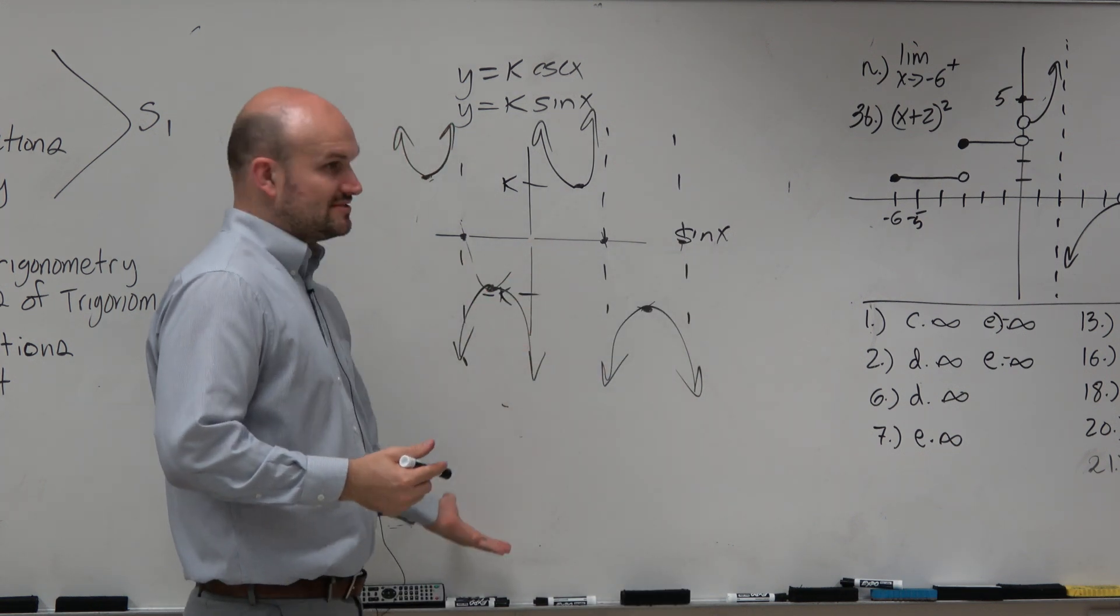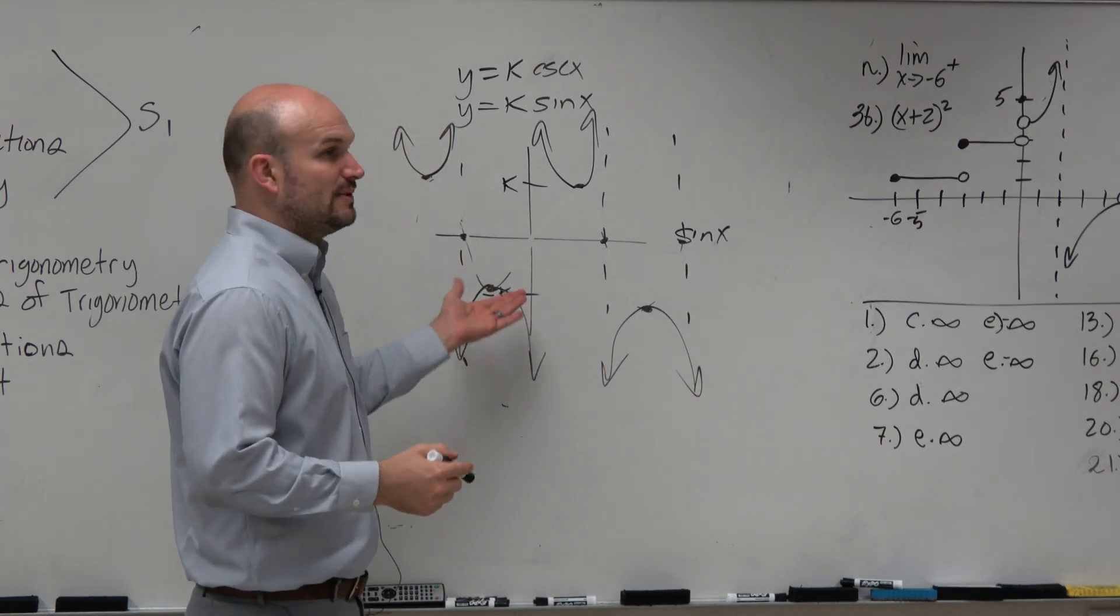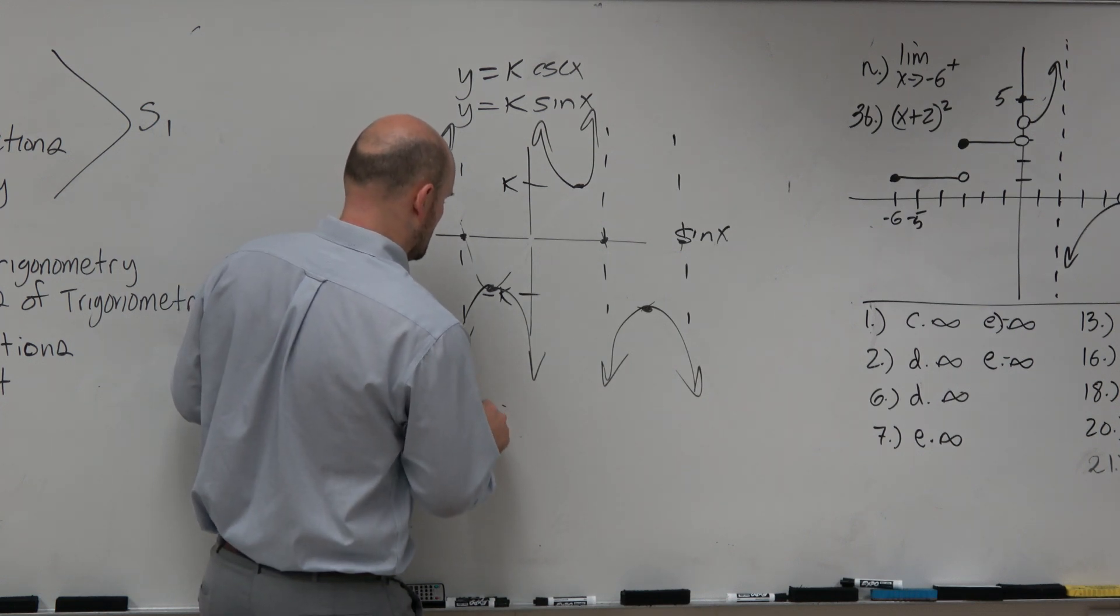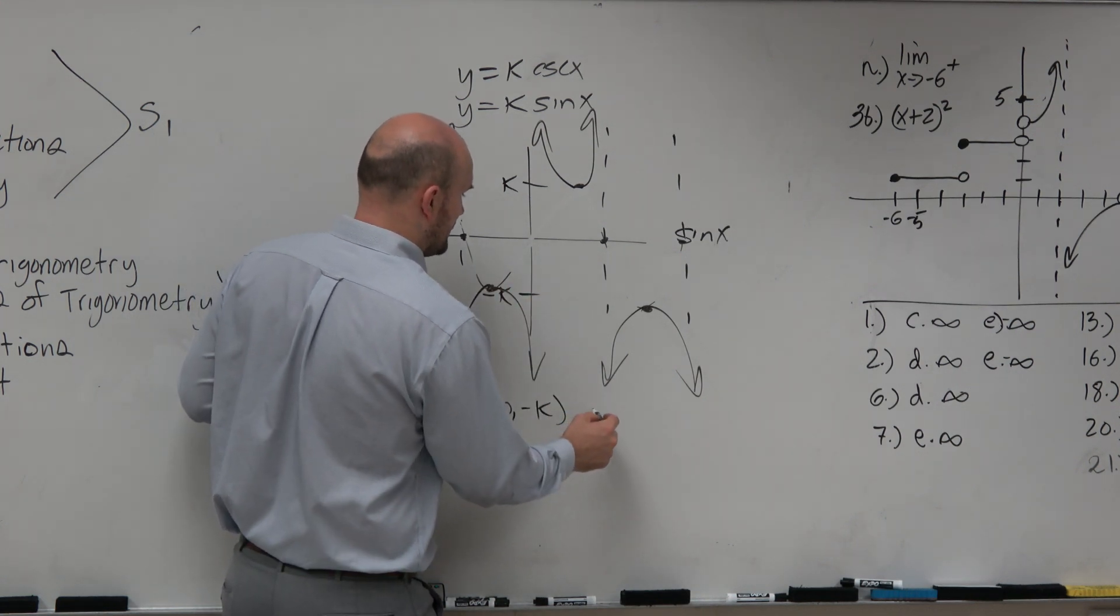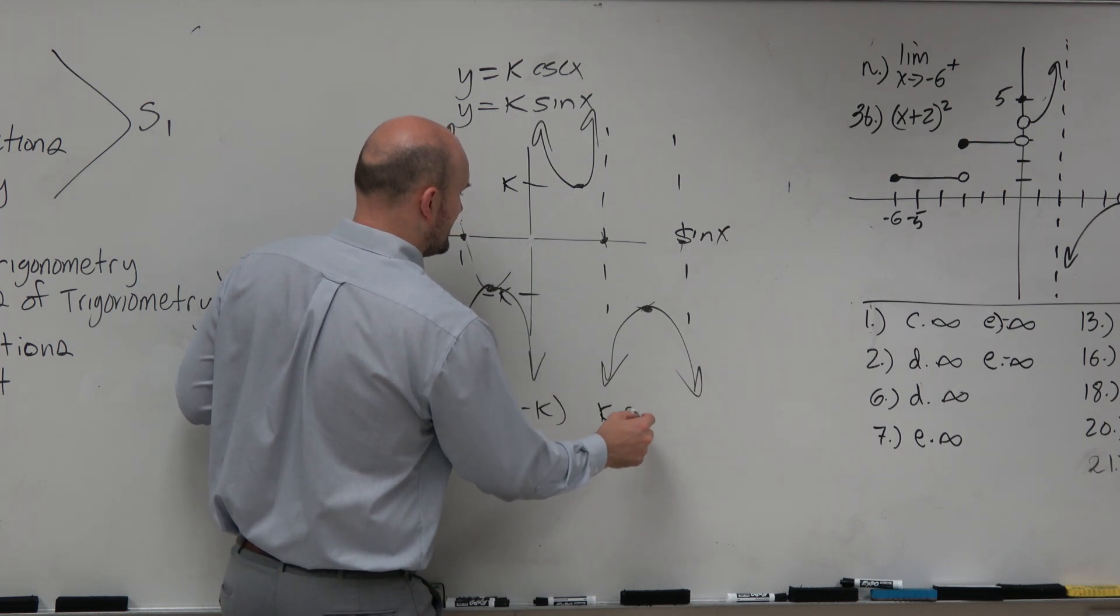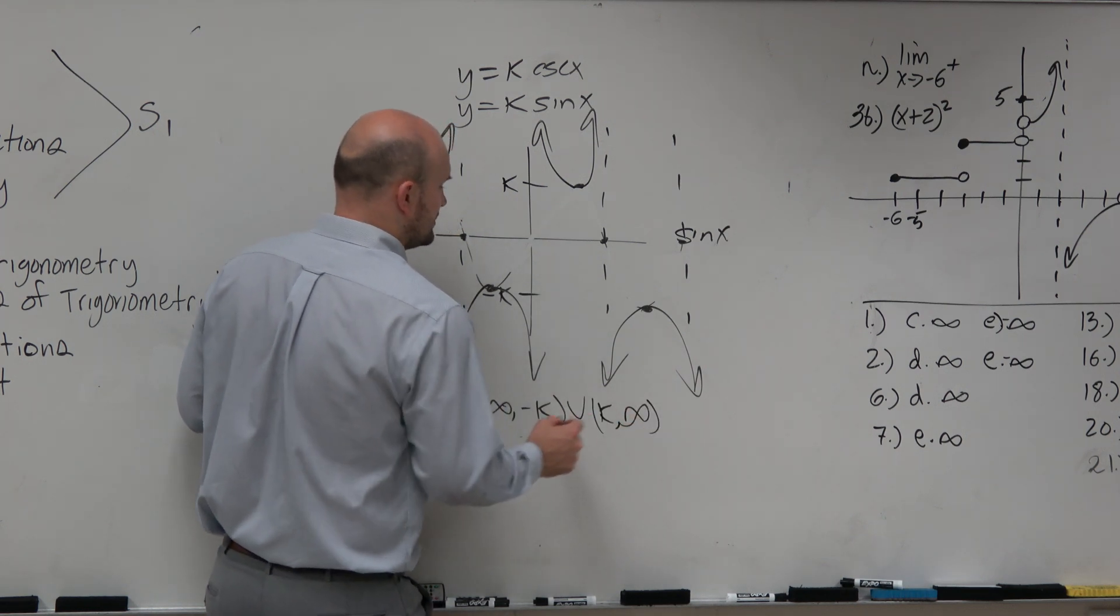Well, the range goes down to negative infinity, and then all the way up to negative k. Then it's going to go from k to infinity. And then you just union it, correct.